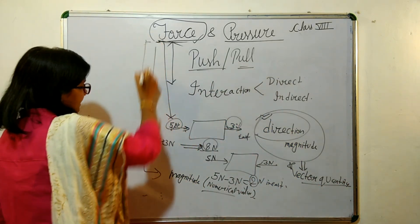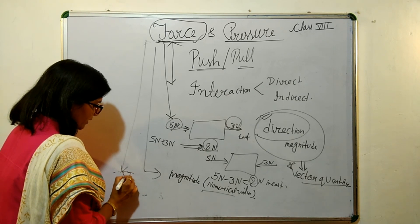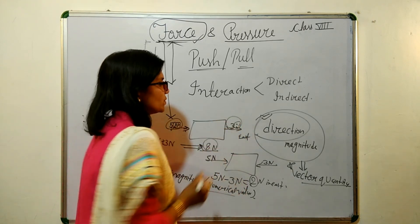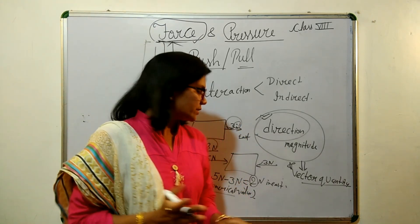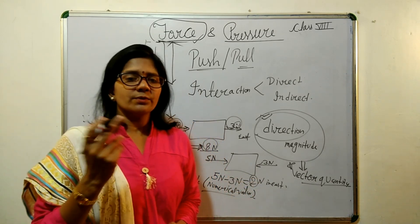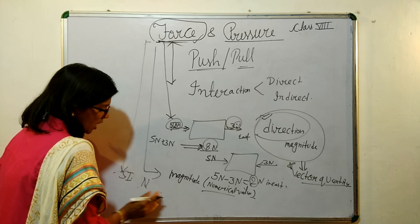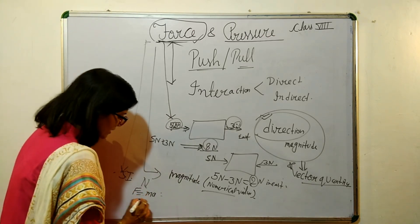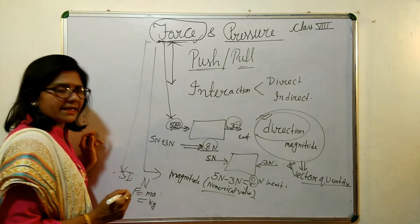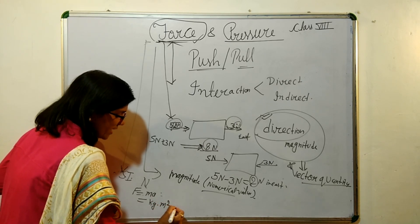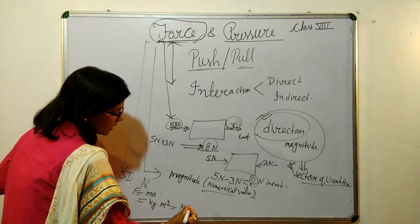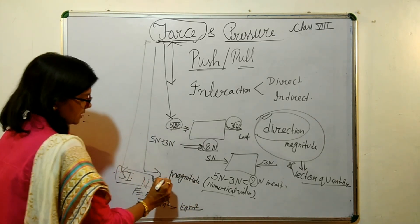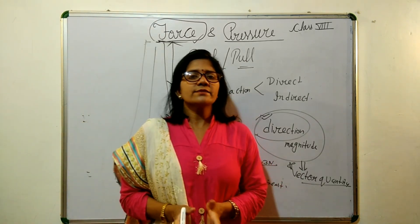One more thing about force: its SI unit is newton. F is equal to M into A — mass into acceleration. Mass is in kilograms and acceleration in meters per second squared in SI units. We also express the SI unit of force as newton.